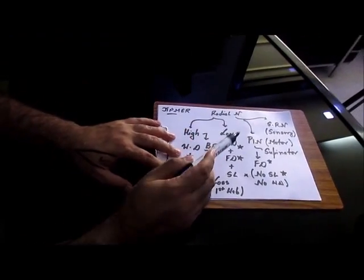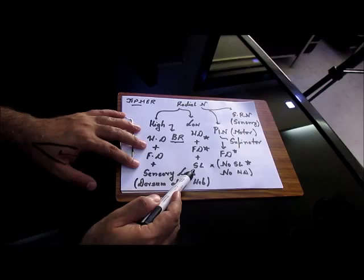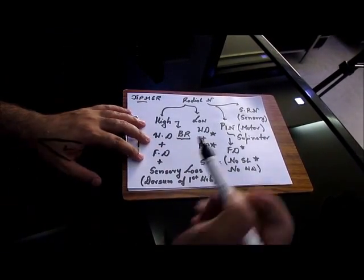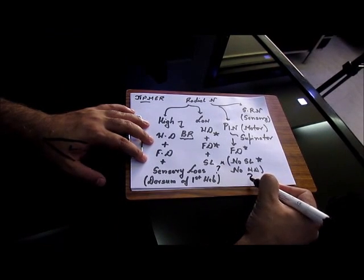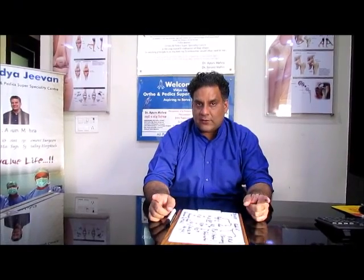When you have a Radial Nerve Palsy, you will have wrist drop, finger drop but there is sensory loss. When you have a Posterior Interosseous Nerve Palsy, you don't have wrist drop. Which one to choose? We have to choose either Posterior Interosseous Nerve or Radial Nerve in the Spiral Groove.